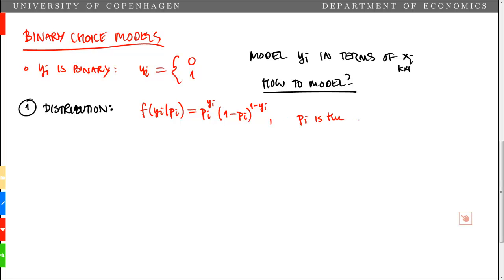Here, pi is the probability that yi is 1. What we want is to make pi a function of the individual characteristics xi. That means that we observe xi for a specific individual, and given xi we can estimate what the probability is that yi is equal to 1 for that individual.